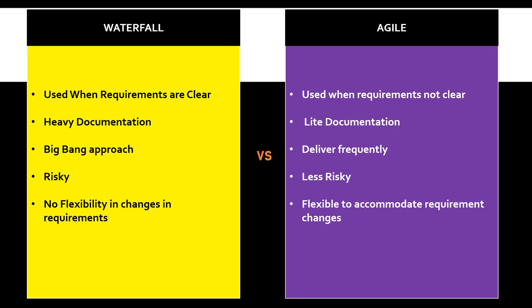Second difference: documentation. Waterfall is very heavy in documentation — BRD, FRD, Technical Specifications, detailed test plans, and test scripts. A lot of time is spent on documentation and review and sign-offs. Agile is very light in documentation — the main artifacts are the product backlog with epics and user stories, and the sprint backlog. Agile believes in conversation among team members rather than extensive documentation, which helps the team progress faster.